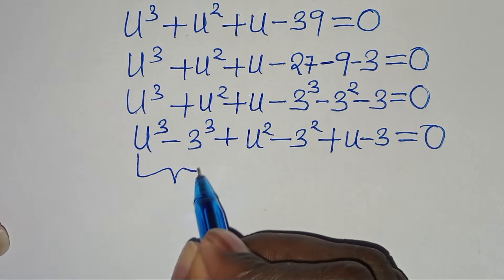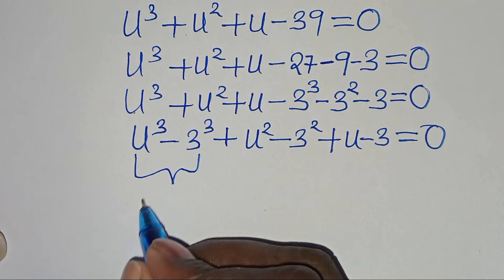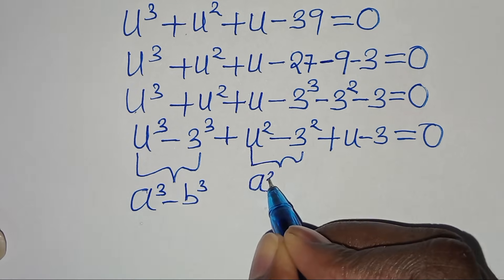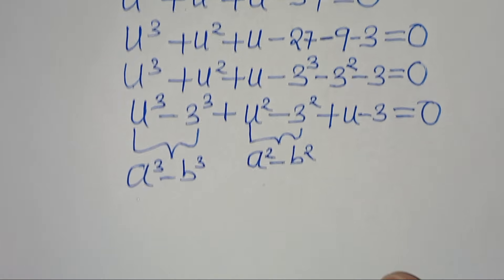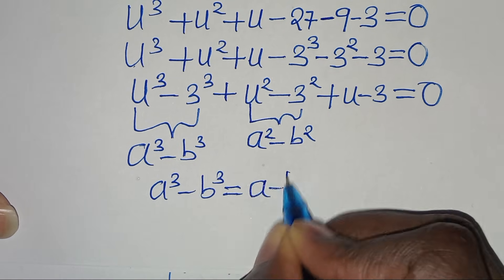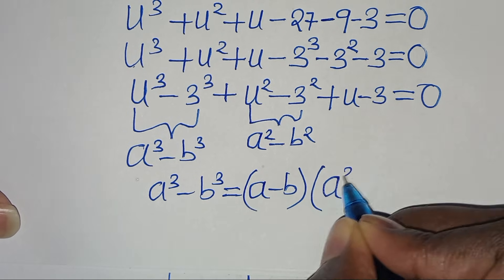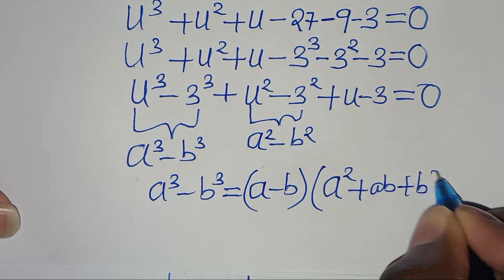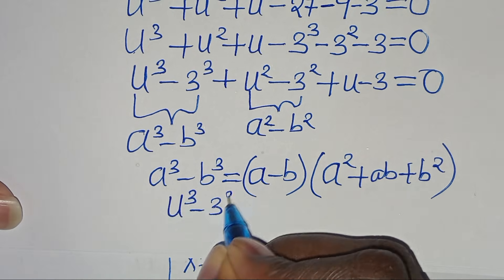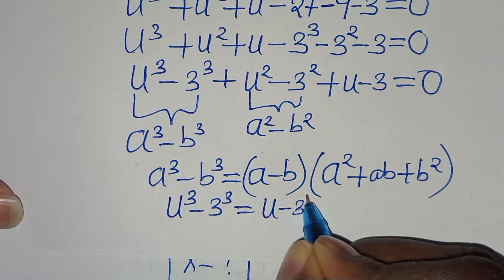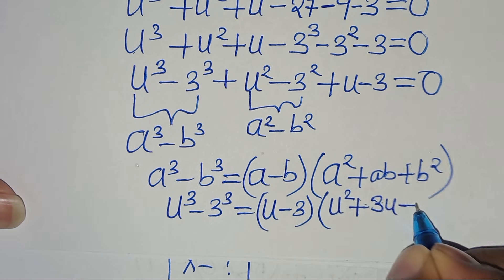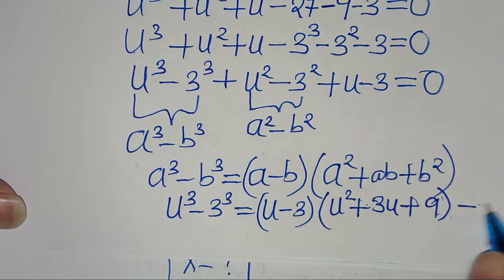From the first part, this is the difference of two cubes expressed as a³ minus b³, and the second part is the difference of two perfect squares expressed as a² minus b². For the difference of cubes, a³ minus b³ equals (a minus b)(a² plus ab plus b²). This implies u³ minus 3³ equals (u minus 3)(u² plus 3u plus 9). Let's call this equation 1.